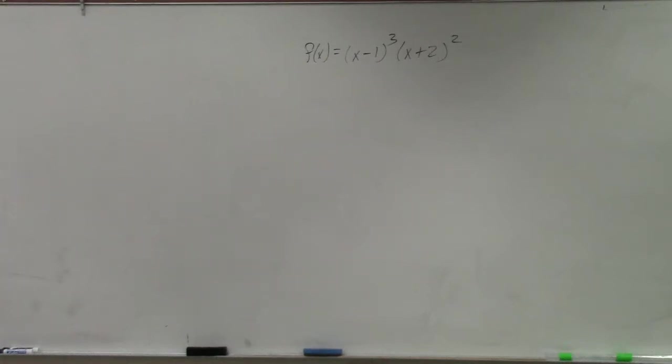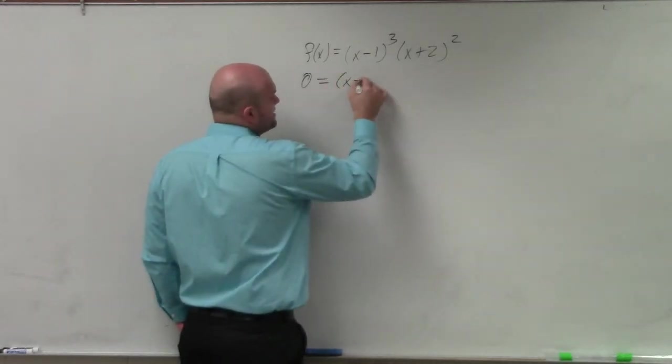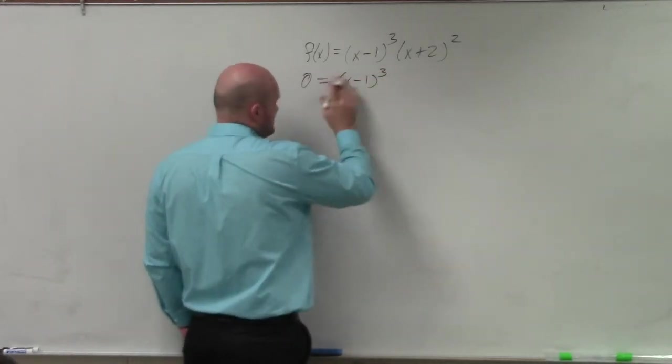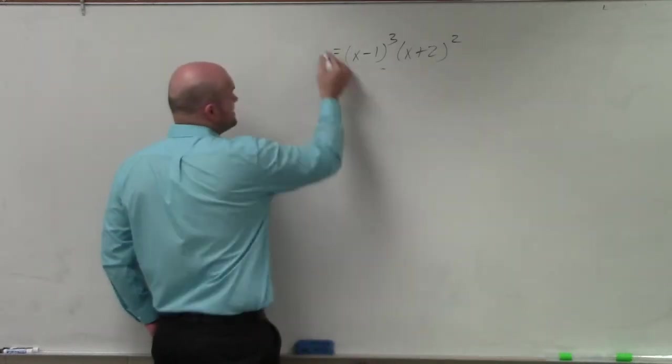Set it equal to 0 and then solve. We replace f(x) with 0, so we have (x - 1)³. Actually, let's save some time. Replace f(x) with 0.